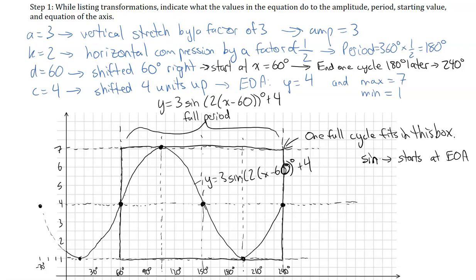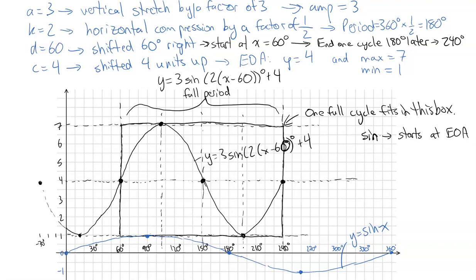And so what I'll finish off now with is just showing you how that compares to the original y equals sine x. So in blue at the bottom there, you can see y equals sine of x. You can see the amplitude was originally 1. It's now 3. So it's been vertically stretched by a factor of 3. The k value is 2. So it was 360 degrees. And now the period has become 180 degrees. So it's half of what it was. It's been shifted 60 degrees to the right. So originally we started the equation of the axis at 0. And now it's starting the equation of the axis at 60. And we also see that c equals 4. It's been shifted the equation of the axis up 4 units.